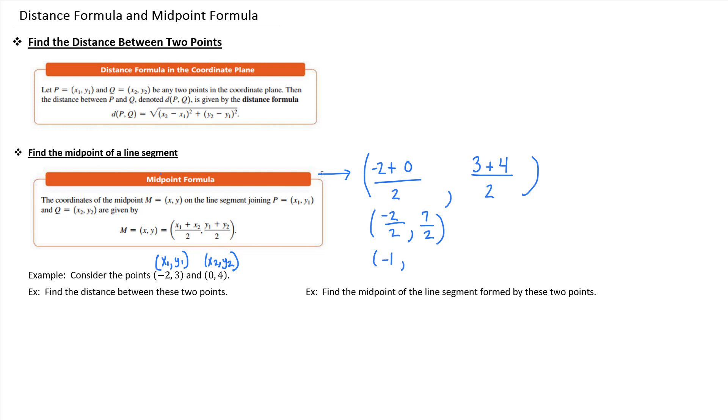But -2 divided by 2 is -1. And 7 divided by 2, you could leave it like that if you'd like, you could make it a mixed number if you like, you could make it a decimal if you like. I'll go ahead and make it a mixed number. 2 goes into 7 three times with a remainder of 1, and your denominator was 2.